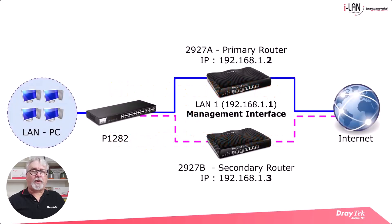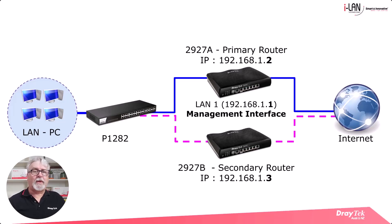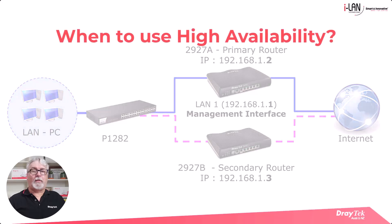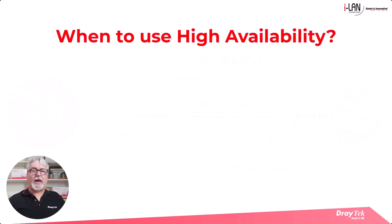High availability, also called hardware redundancy, refers to the capability of automatically switching hardware such as a standby router when a primary router fails due to various reasons such as a loss of power or hardware failure. High availability is crucial in scenarios where any network outage can result in significant loss or service disruption.